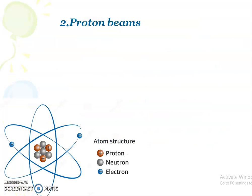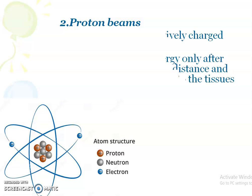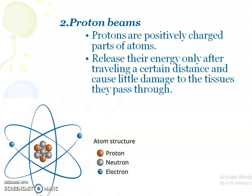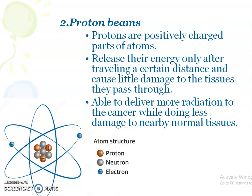The next type is proton beams. Protons are the positively charged parts of an atom. They release their energy only after traveling a certain distance and cause little damage to the tissues they pass through. This allows proton beams to deliver more radiation to the cancer while doing less damage to the nearby normal tissues.